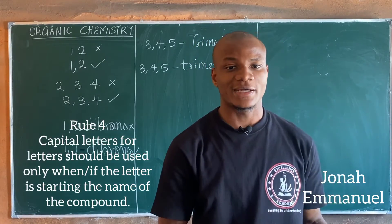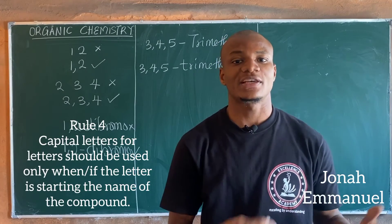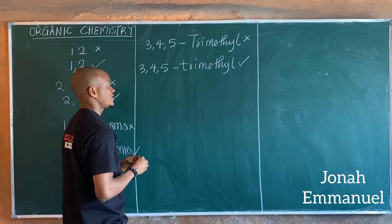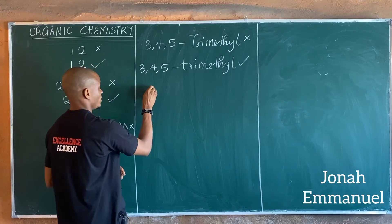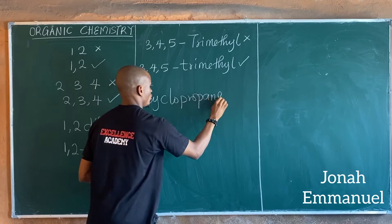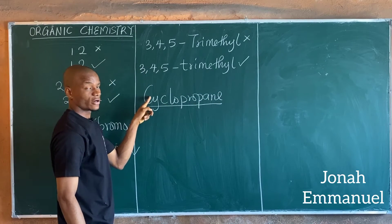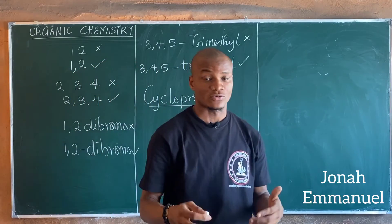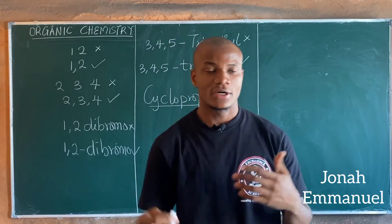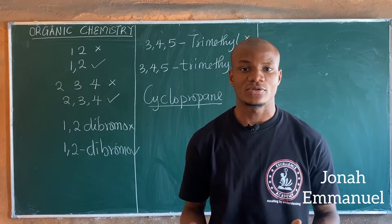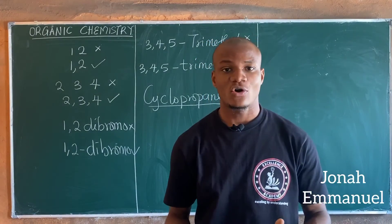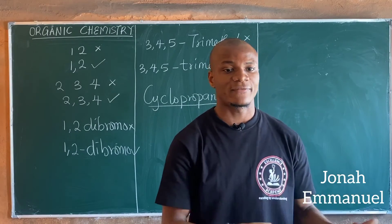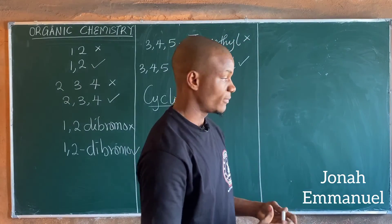The fourth rule for writing the names of organic compounds: capital letters should be used only when the letter is starting the name of the compound. I only use a capital letter when I'm starting the name of the compound. For example, 'Cyclopropane' — I start with a capital C because it is starting the name of the organic compound. So those are the four rules: one, separate a number from another using a comma; two, separate a number from an alphabet using a hyphen; three, letters after a number should be written with small letters; four, only use a capital letter when starting the name of the compound.